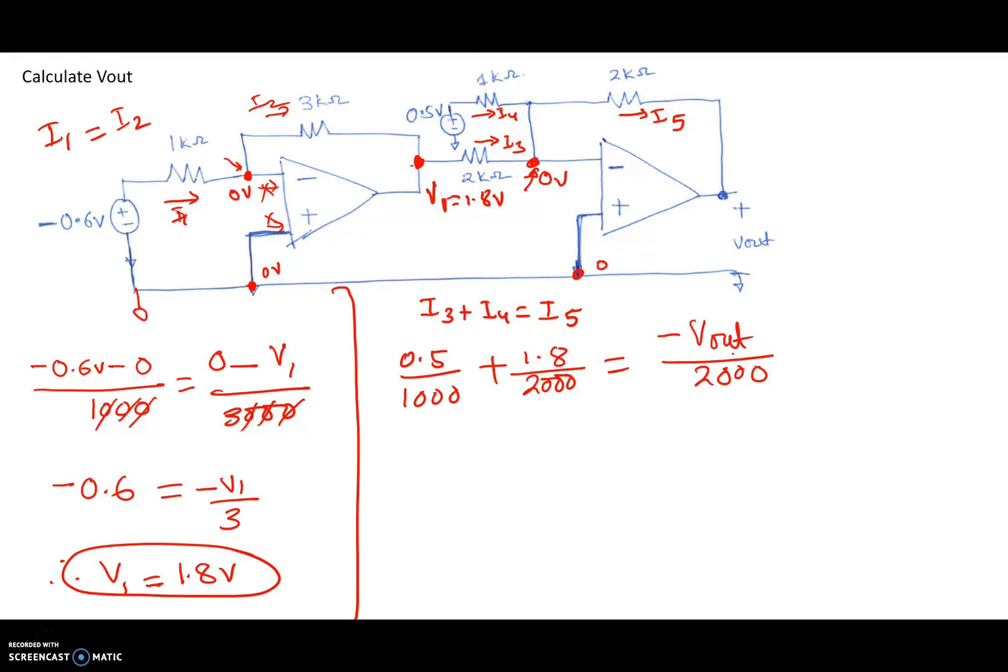Now, if I rearrange terms here, I will get, so these three zeros on each side, if I multiply both sides by 1,000, or let's multiply both sides by 2,000.